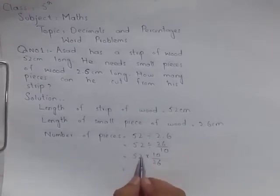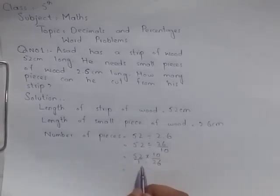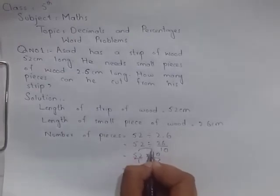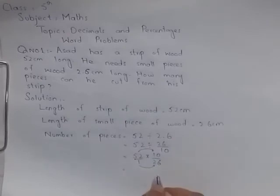52 aap dekh sakte hain ye whole number hai. Jab main iski denominator mein 1 jo hai put kar dungi to ye fraction form ban jayegi. To numerator ko numerator se multiply kar denge aur denominator ko denominator se multiply kar denge.